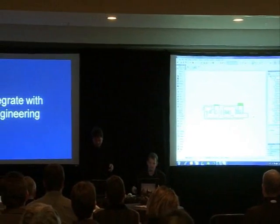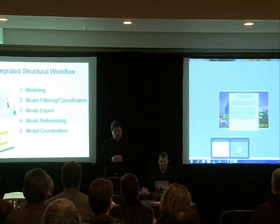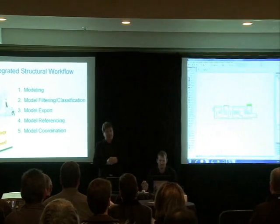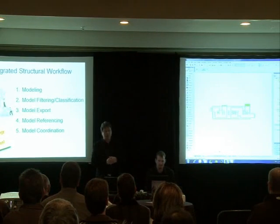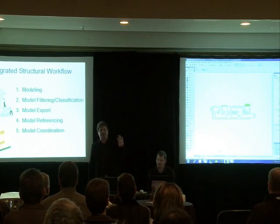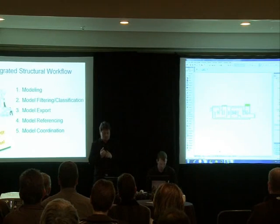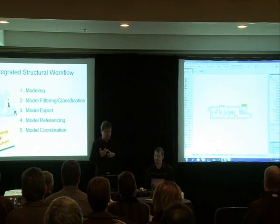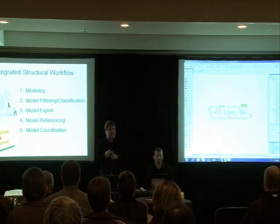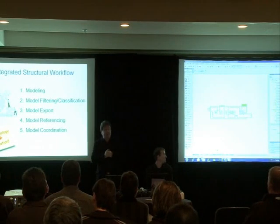So what is the first step? We spoke a lot with engineers — we even have a product manager who is a structural engineer at Graphisoft — and came to the conclusion that there are five main steps in the engineering-architectural workflow. The first is modeling by both sides, then model filtering or classification of load-bearing versus non-load-bearing elements, then you export your model to the engineer, there is referencing, and of course there is coordination.